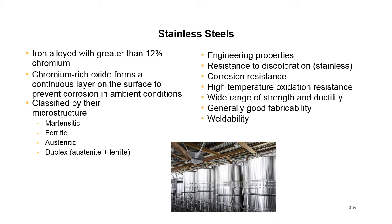Iron alloyed with greater than 12% chromium is a stainless steel. A chromium-rich oxide forms a continuous layer on the surface to prevent corrosion in ambient conditions. Classified by their microstructure, you have four types: martensitic, ferritic, austenitic, and duplex. Duplex is a combination of austenite and ferrite in the microstructure.